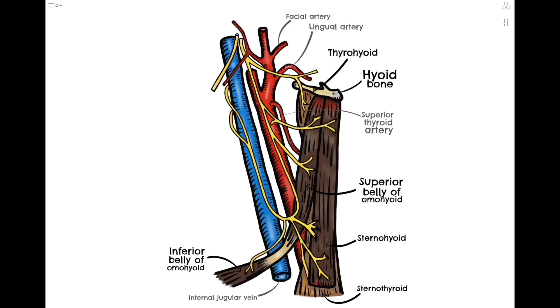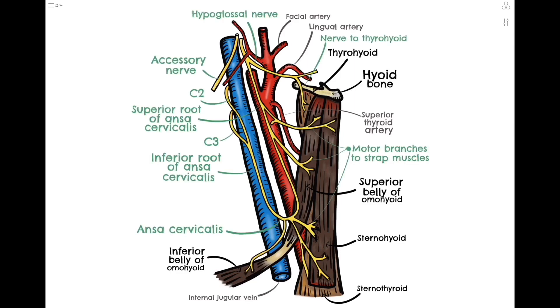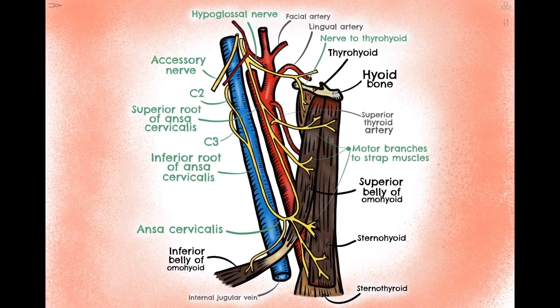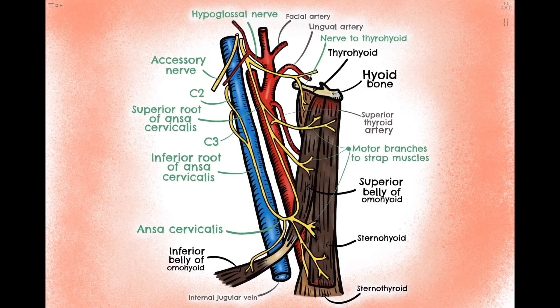Let's start by looking at our superior root, which descends in front of the carotid artery. Right at the top you can see that it branches off of the hypoglossal nerve, which is the 12th cranial nerve, and that's because some fibers of C1 — and sometimes C2 — hitchhike a ride on the hypoglossal nerve in order to reach the neck. Some of these fibers continue with the hypoglossal nerve to supply the thyrohyoid and geniohyoid muscles. Some of the fibers of C1 then leave the hypoglossal nerve and drop downwards to form the superior root of Ansa Cervicalis. The important thing to remember is that the superior root carries fibers from C1 and provides branches to three main muscles: the superior belly of omohyoid and the superior portions of sternothyroid and sternohyoid muscles.